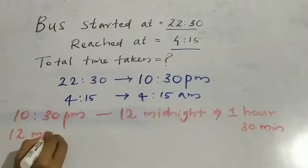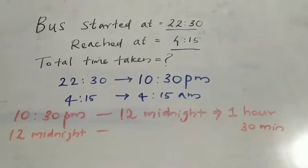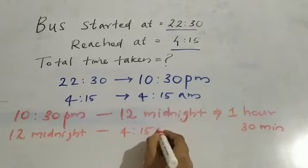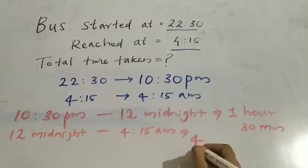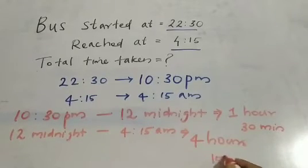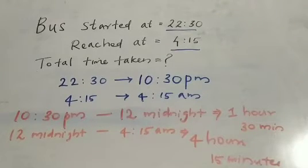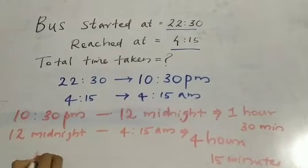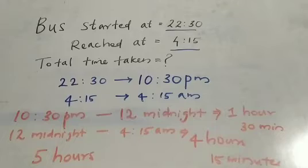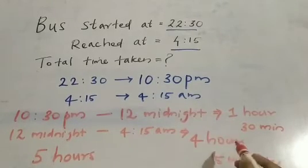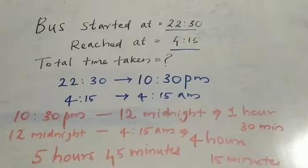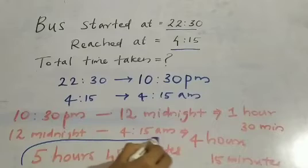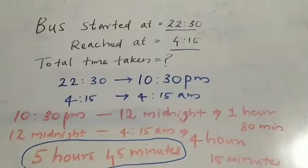Now, 12 midnight to 4:15 AM — how many hours? 12 to 4 is 4 hours, and 15 minutes. So we calculate: 1 hour plus 4 hours is 5 hours; 30 minutes plus 15 minutes is 45 minutes. So the answer is 5 hours 45 minutes.